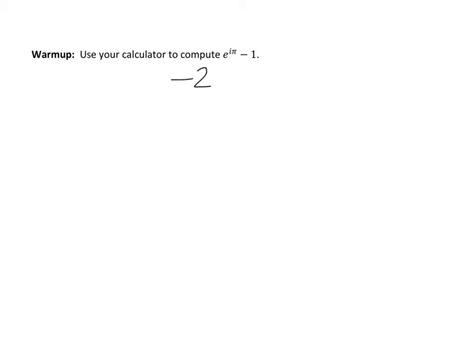It just occurred to me, you might have gotten an error when you did this on your calculator. If you did, you're going to need to go into the mode. Down near the middle, there's a spot where it says real, a plus bi, and re to the theta i power. If you set it to a plus bi, you won't get an error when you do these things. I apologize that I didn't mention that earlier.